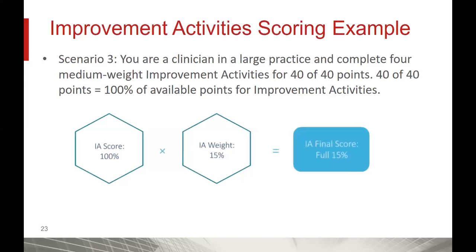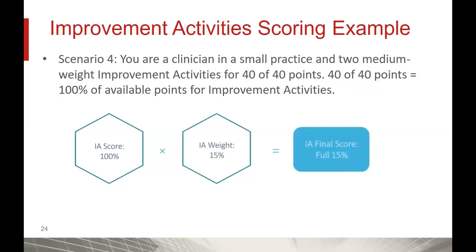Scenario three: a clinician in a large practice completes four medium-weight improvement activities for 40 of 40 points. Running through the equation, you reach the full 15%, which would be 15 points on your performance score — meeting the performance threshold to avoid a negative adjustment. In scenario four, a small practice completes two medium-weight improvement activities for a score of 40 points. 40 of 40 is 100%, and running it through the equation, you reach 15% for your performance score — again avoiding a negative adjustment.